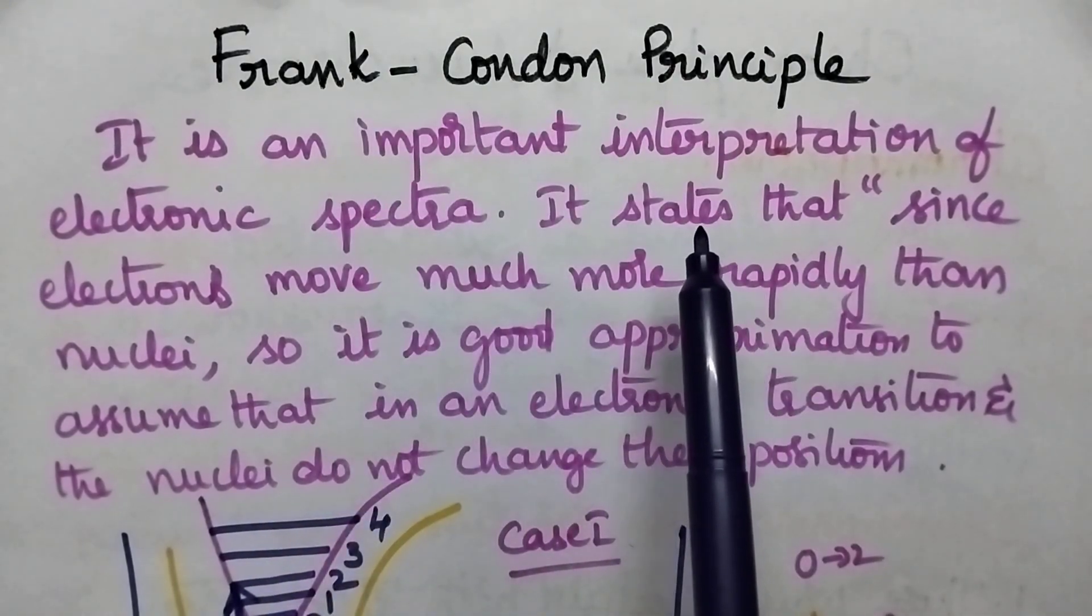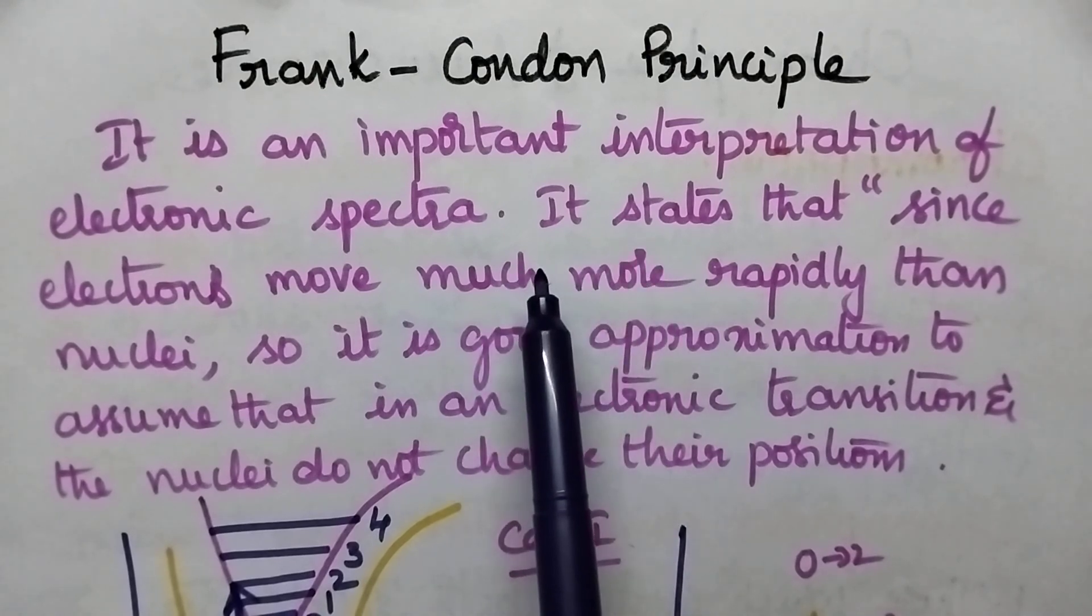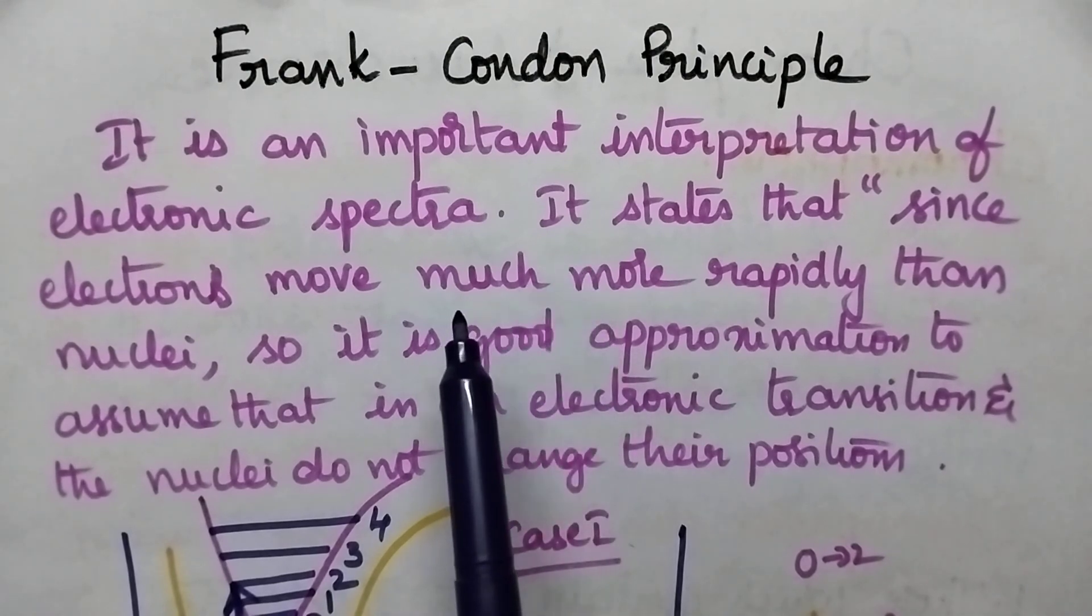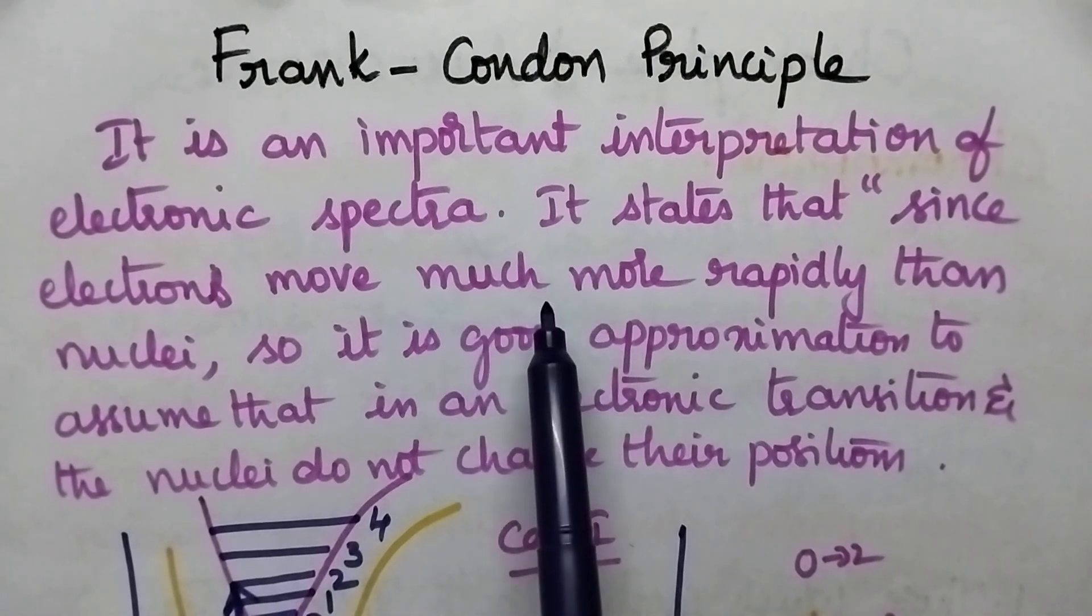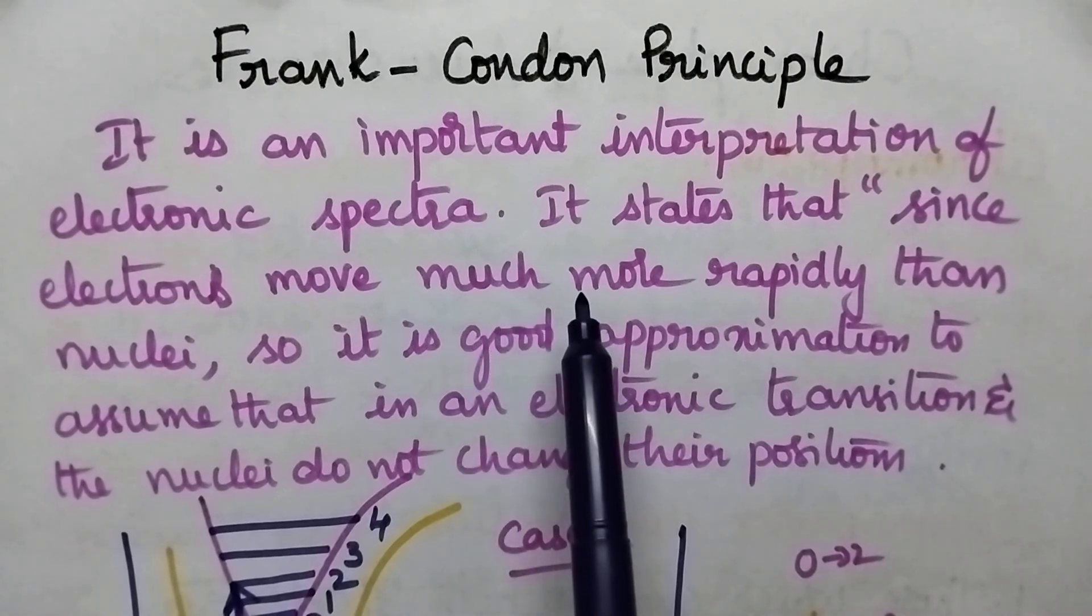It provides a very good interpretation to explain the nature of electronic spectra. According to the Frank-Condon principle, only electrons move rapidly, not the nuclei, when exposed to UV radiation.